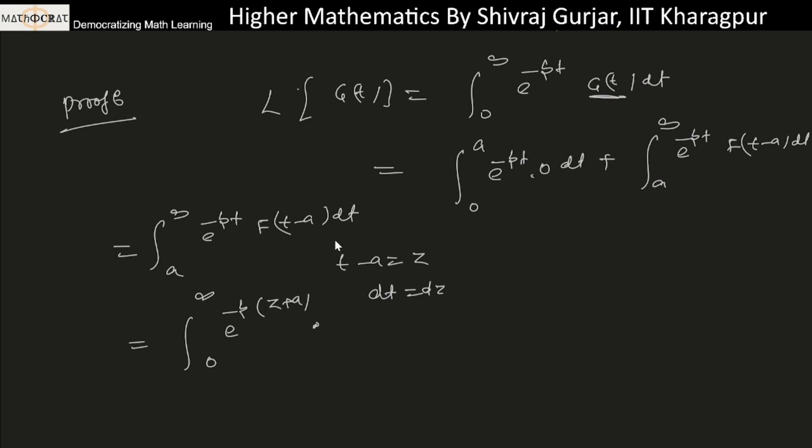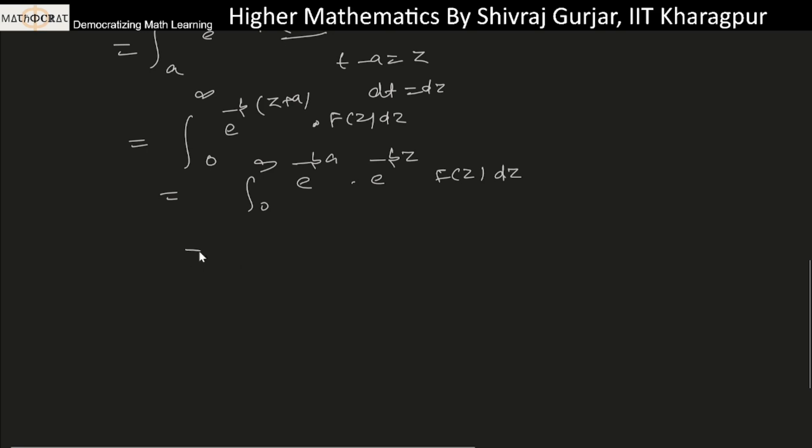When t minus a equals z, we have f(z). So this will be from 0 to infinity, e^(-pa) e^(-pz) f(z) dz. e is a constant, so this can be taken out. e^(-pa) times the integral from 0 to infinity of e^(-pz) f(z) dz, which is nothing but F(p).